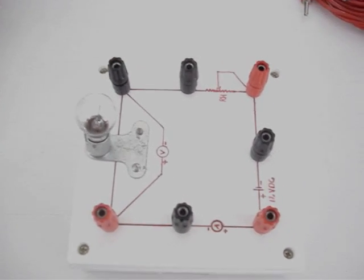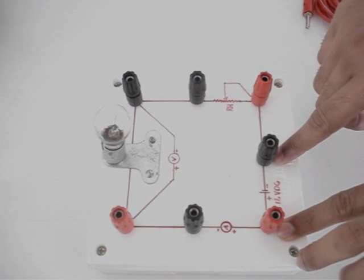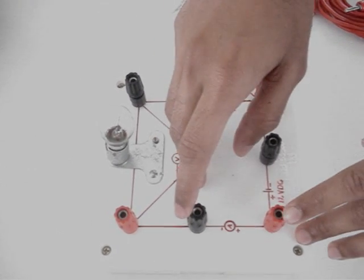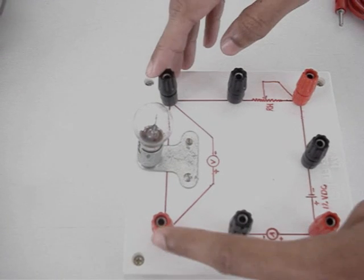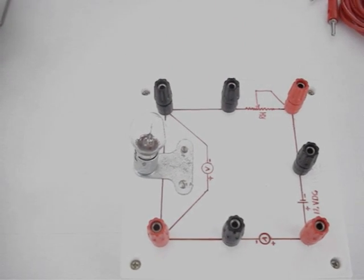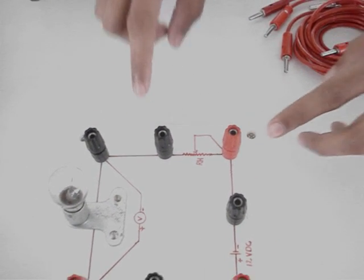This is the circuit board. Here we connect the battery eliminator. We connect the ammeter between these two terminals. The bulb is already connected. Voltage across the bulb is measured using the voltmeter. The rheostat is connected between these two terminals.